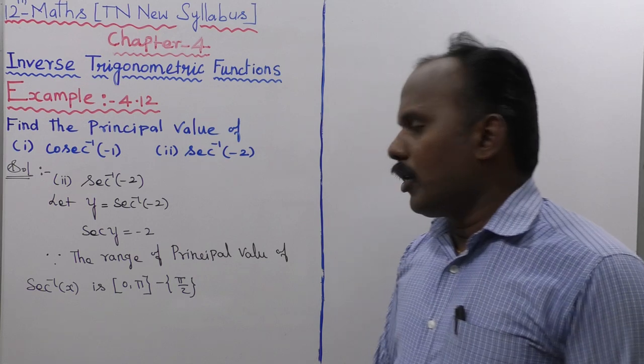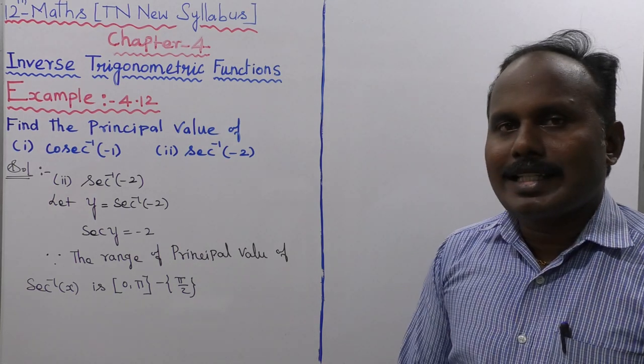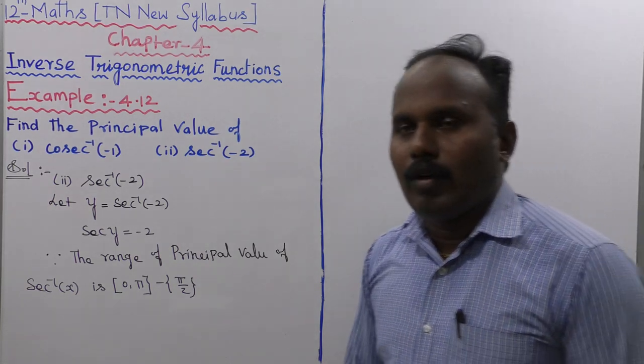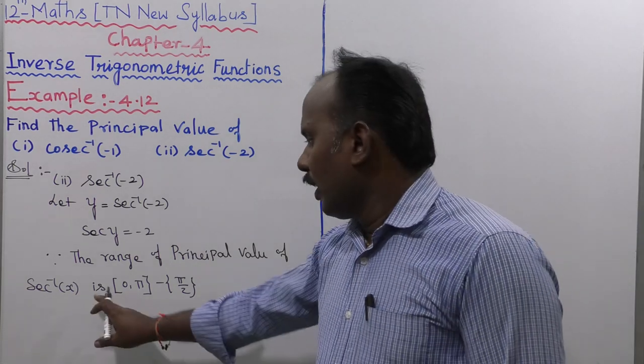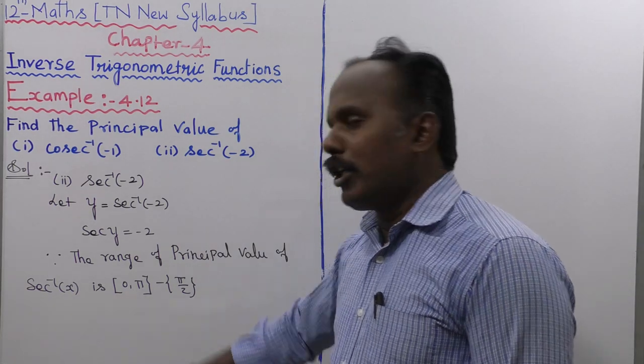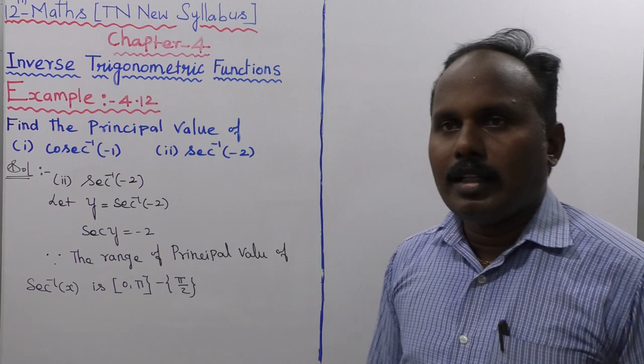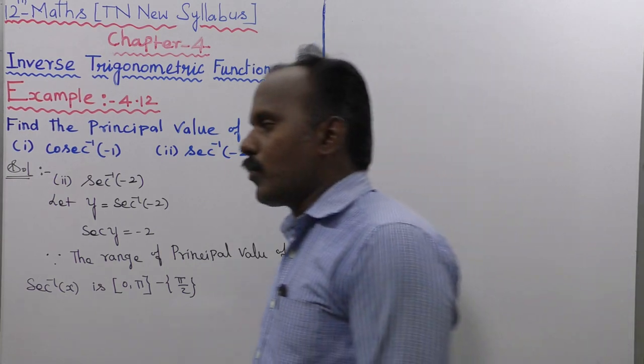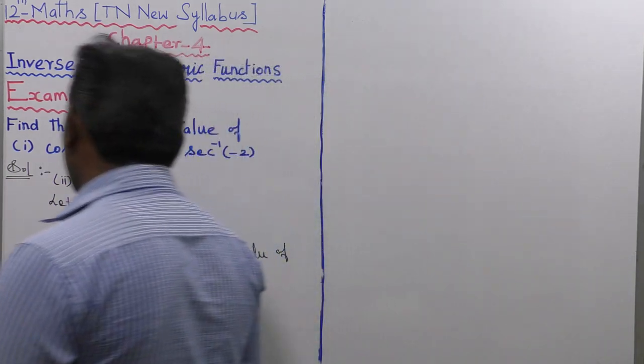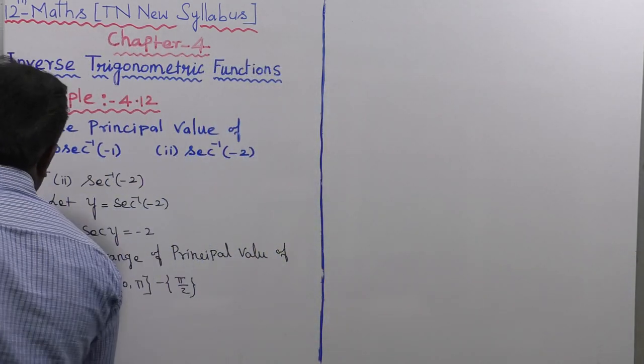That is, except the value of pi by 2, which equals 90 degrees, because at 90 degrees secant goes to infinity — it is a discontinuous function of sec inverse of x.